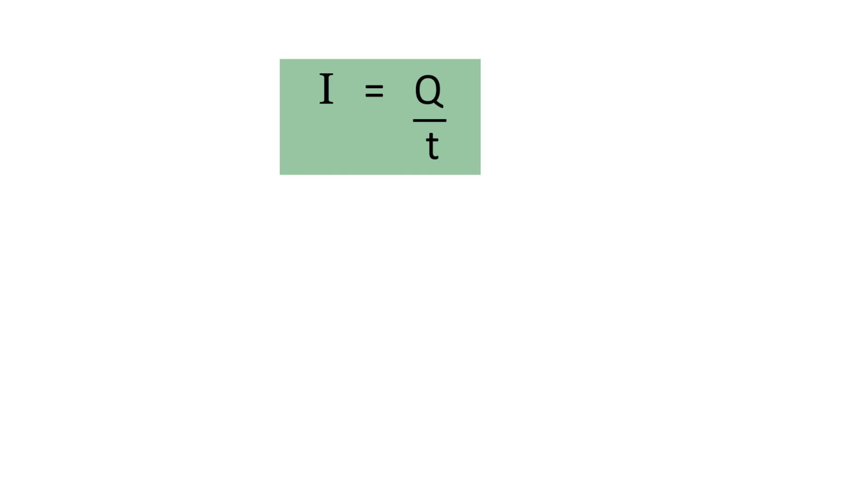This is just our equation for current, I equals Q over t, rearranged by multiplying both sides by t. The t's cancel out, we end up with It equals Q, and because these two things are equal, we can swap sides and say Q equals It.